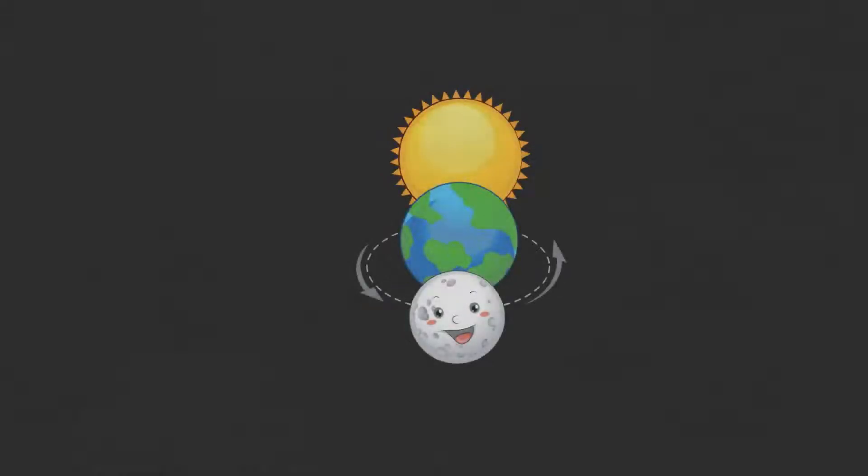Solar eclipse happens when a portion of the earth is in shadow due to the moon, which either fully or partly blocks the sunlight.